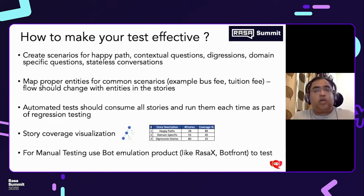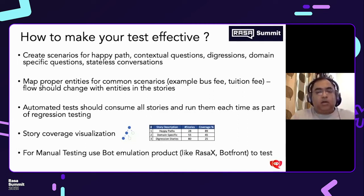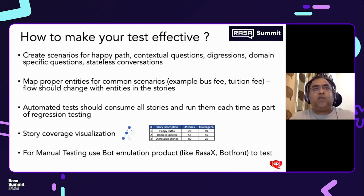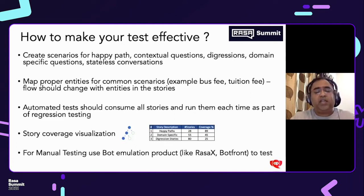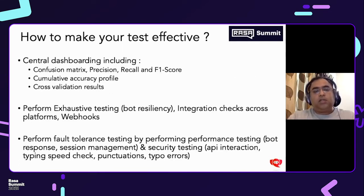Another approach is to have a story coverage visualization that tells you how coverage is at each scenario level, and also tells you whether you have sufficient data to test your bot and whether that data is mapping to different stories. We prefer to use a bot emulation product like RasaX or Botfront for manual testing, because it becomes extremely easy to spot when things are not matching. Other than that, we need centralized dashboarding that gives us confusion metrics, precision recall and F1 score for the model, as well as cumulative accuracy.